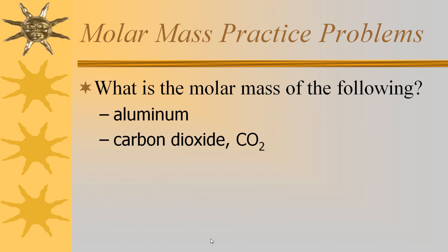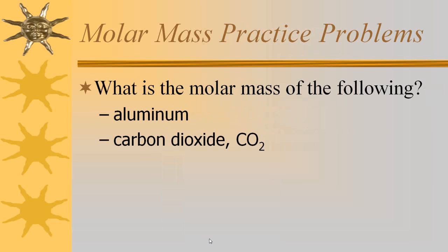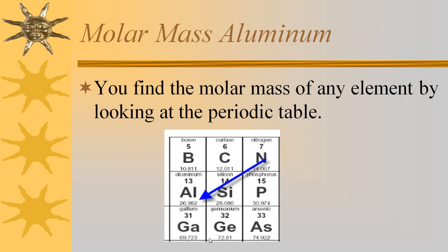Okay, let's do a little more practice. What is the molar mass of the following? Aluminum and carbon dioxide. Aluminum, simple. Remember that we find it by just looking at the periodic table. So we find aluminum on the periodic table. It has a molar mass of 26.982. Simple.